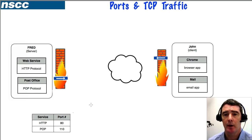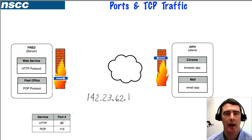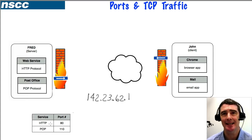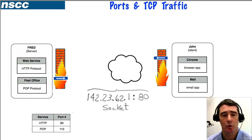We've got a couple of computers here. We're going to call one of the computers John, which simply represents a port number like 142.23, and it's going to Fred. Port numbers represent where packets are coming from, what applications are involved, and where they're going. Well-known port numbers like 80 and 110 are standardized. Together, the IP address and port number are called a socket, and you need both for communications.